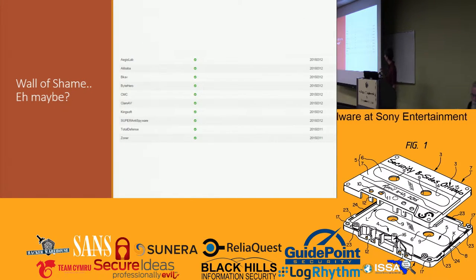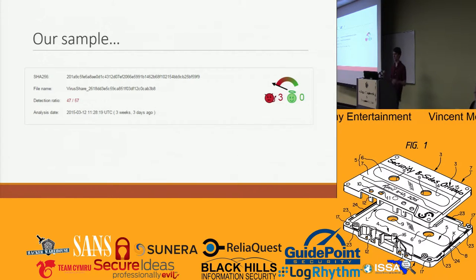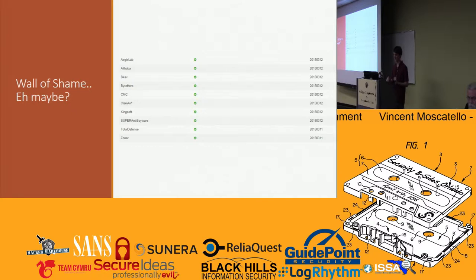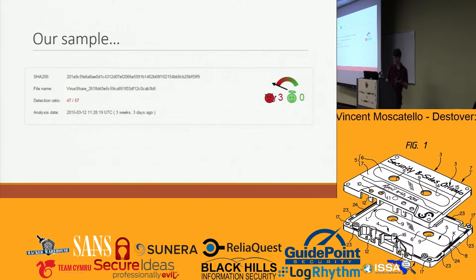These are the antivirus engines that said this wasn't a malware sample. Going back a slide, 47 out of 57 antivirus engines said that this was a bad, evil malware sample. These ten said it was fine, which is a little surprising because you recognize some of these names. Maybe it's just because of the time it got uploaded and analyzed — it was pretty recent, like three weeks and three days since when I made this slide.